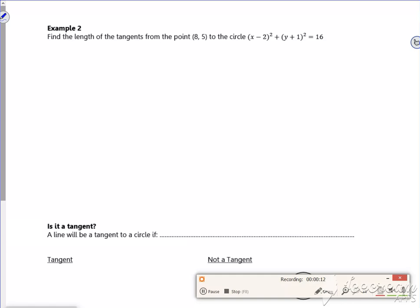Example 2 says find the length of the tangents from the point (8, 5) to the circle there. Let's have a look at this. So I know the center is (2, -1) and I know the radius is 4.